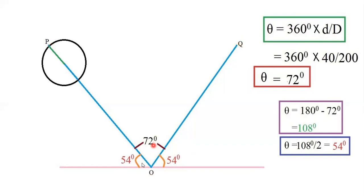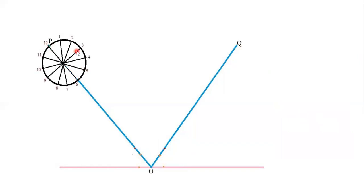The next step is to divide the small circle into 12 equal parts. You can use a protractor taking 30 degrees each time. You can also use the arc method — refer to the cycloid video for how to divide into 12 parts. Divide the circle into 12 equal parts and name them accordingly.